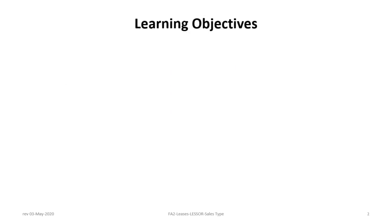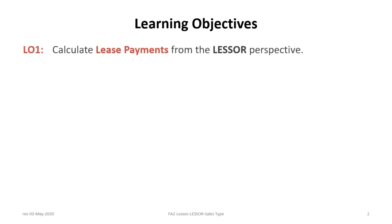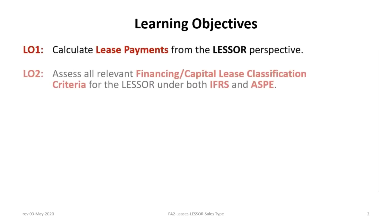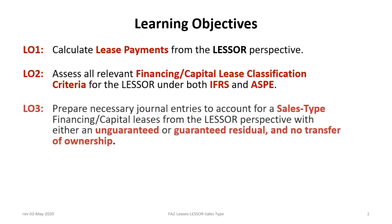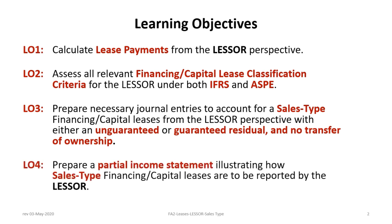This tutorial has four key learning objectives. The first will be to calculate lease payments from the lessor's perspective. Second, to assess all relevant financing capital lease classification criteria for the lessor under both IFRS and ASPE. Third, to prepare the necessary journal entries to account for a sales type lease from the lessor perspective with either an unguaranteed residual or guaranteed residual and where there is no transfer of ownership. And fourth, to prepare a partial income statement illustrating how a sales type lease would be reported on a lessor's income statement.